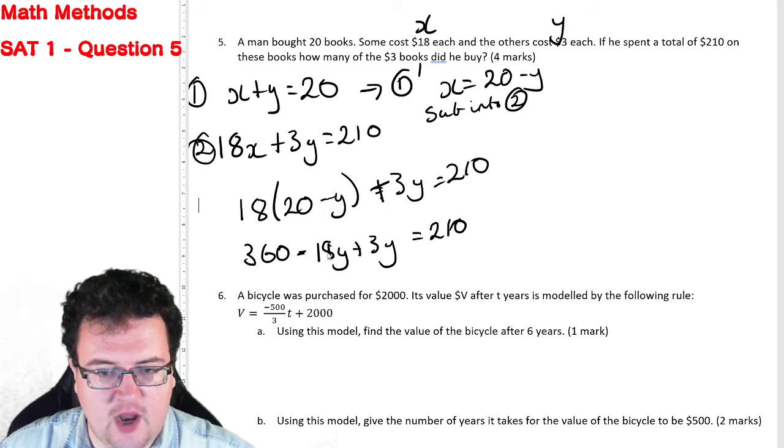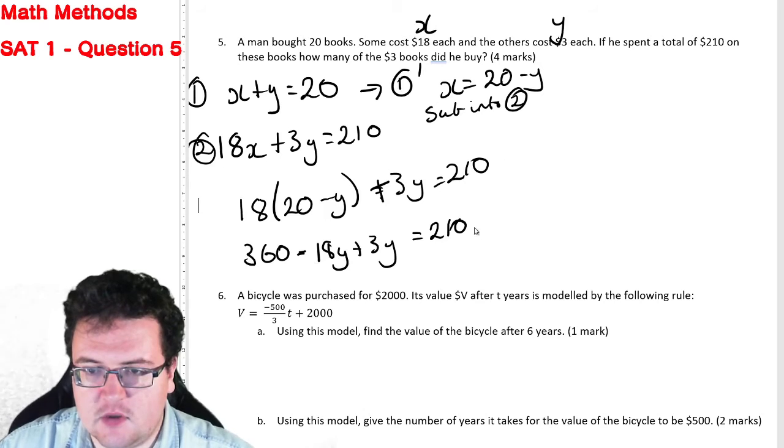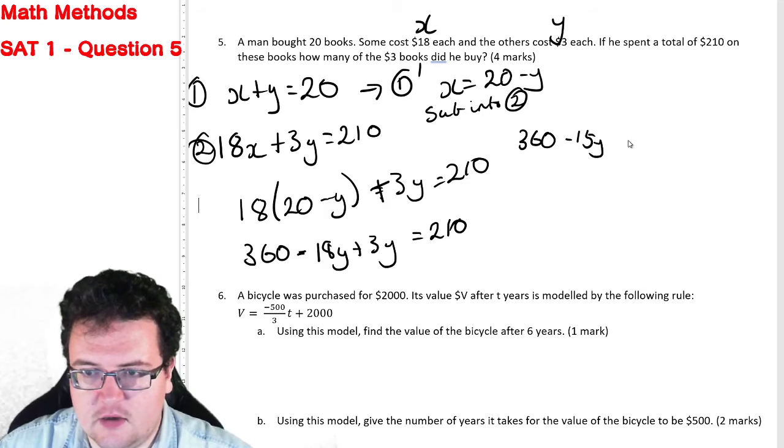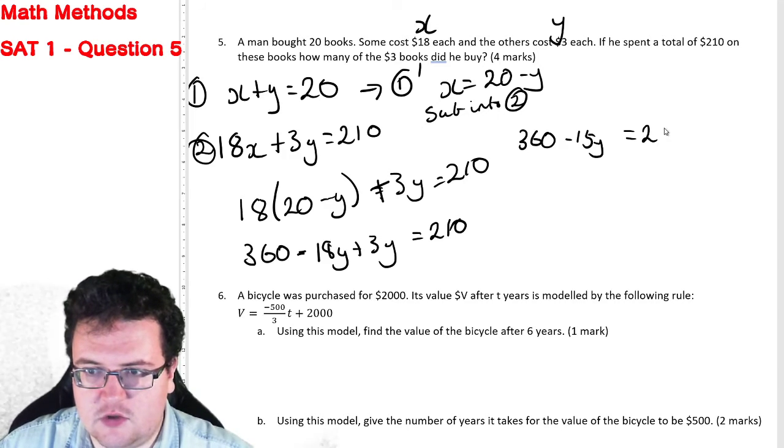So minus 18Y plus 3Y is going to be minus 15Y. So I have 360 minus 15Y equals 210.